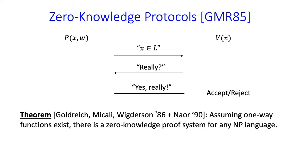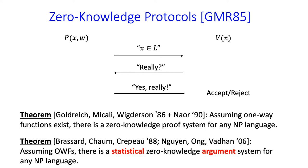Due to a celebrated result of Goldreich, Micali, and Wigderson, we know that under the minimal assumption that one-way functions exist, there is a zero-knowledge proof system for every NP language. In the GMW protocol, soundness is guaranteed to hold against unbounded cheating provers, while zero-knowledge holds against computationally bounded cheating verifiers. It's also now known how to construct the opposite: a protocol where soundness holds against computationally bounded cheating provers and zero-knowledge is guaranteed to hold against unbounded cheating verifiers. This is called a statistical zero-knowledge argument system.